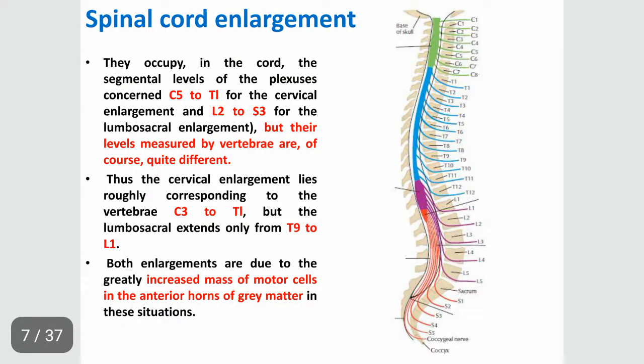Now we will talk about the enlargements of the spinal cord. There are two enlargements: a cervical enlargement and a lumbosacral enlargement. These enlargements are due to an increase in the mass of the motor cells in the anterior horns of the gray matter — the cells responsible for moving our muscles.